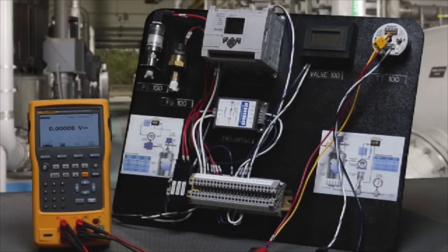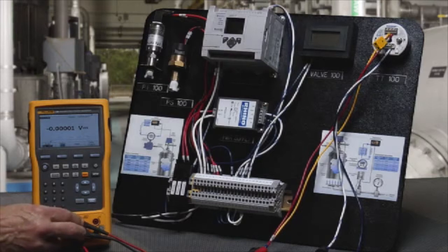In this example, we're going to test an RTD input temperature transmitter using the Fluke 754 documenting process calibrator. We're going to power the transmitter and measure the milliamp signal measured back on the milliamp input jacks of the calibrator.